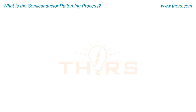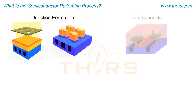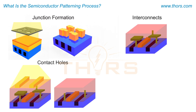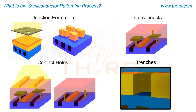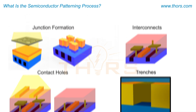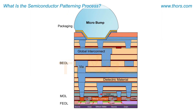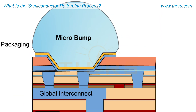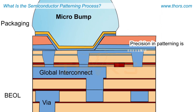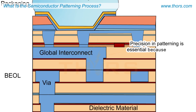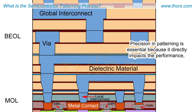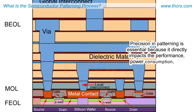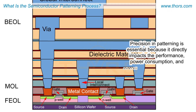These patterns are created to form junctions, interconnects, contact holes, trenches, isolation among different structures, and other functional elements in the microchip. Precision in patterning is essential because it directly impacts the performance, power consumption, and overall functionality of a device.